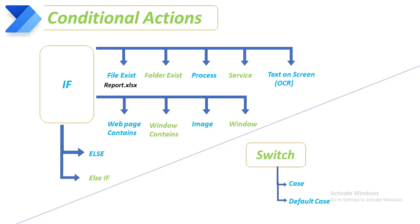First we'll see 'file exists'. Let's assume I want to check for a file like report.xlsx — whether it exists or not. If the file exists and it is true, then I want to perform some actions. In that case I am going to use 'if file exists'.